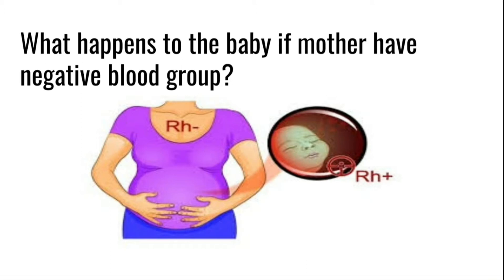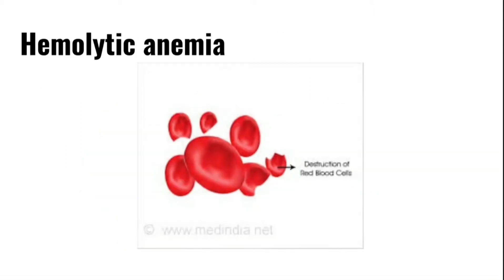Suppose the father's blood group is positive and the mother's blood group is negative — there is a chance of some danger for their second baby. The child can suffer from a disease called hemolytic anemia, which means the RBC of the child will be destructed. We will also see how to prevent this.